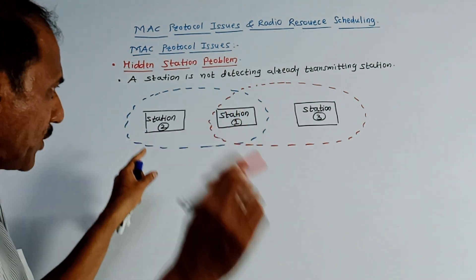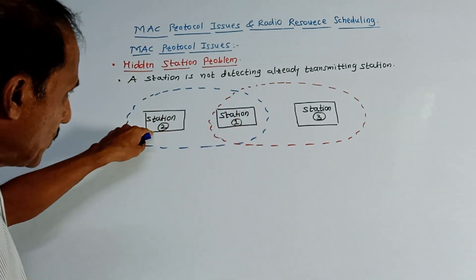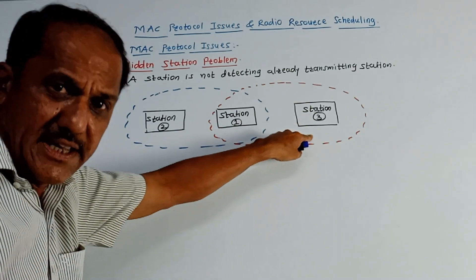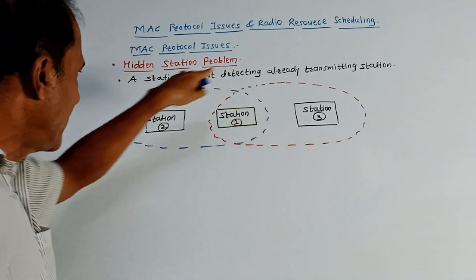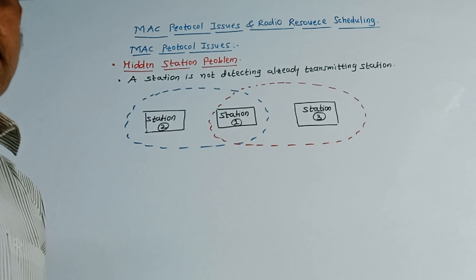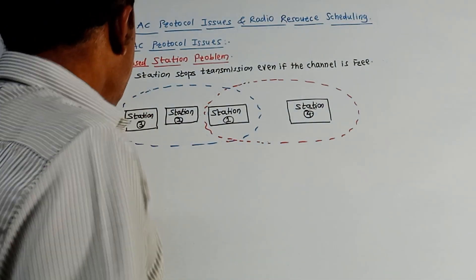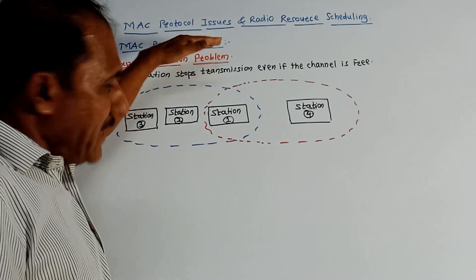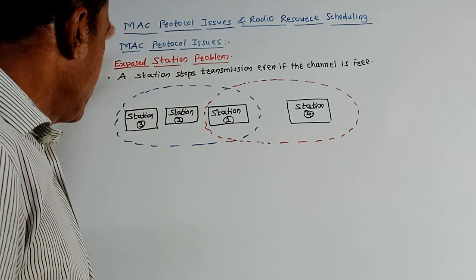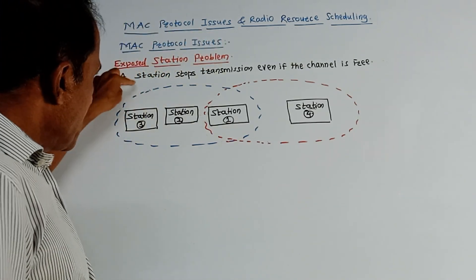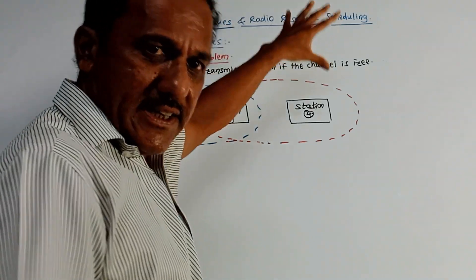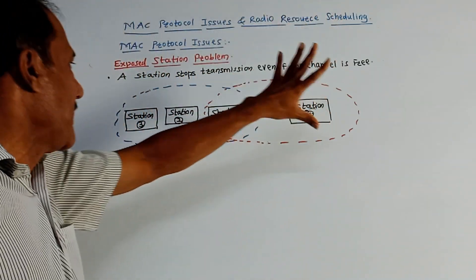This is called hidden station problem because station 2 is hidden for station 3 as well as station 3 is hidden for station 2. So this is the hidden station problem. Next is exposed station problem. It is similar to the earlier case. In this case, a station stops transmission even if the channel is available, even if the channel is free.